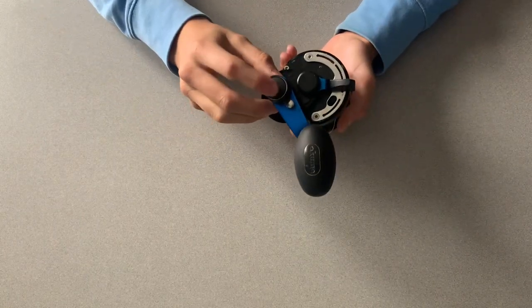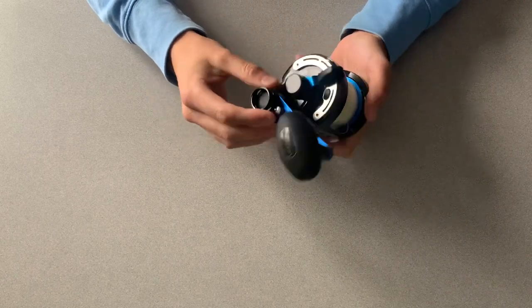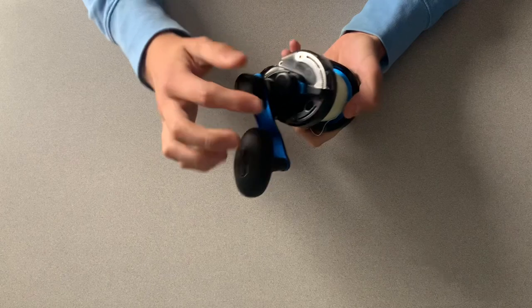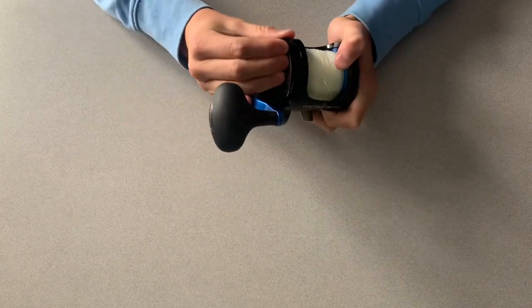The two speeds on this reel are 5.2 to 1 and a 2.2 to 1. Just click this back in if you want to go to high speed, and then push it down if you want to go to low speed. So pretty easy to use.